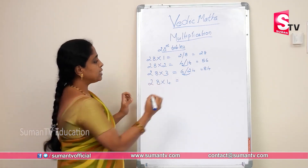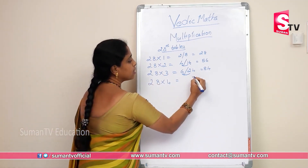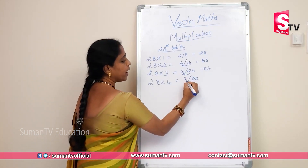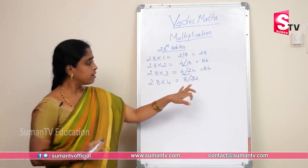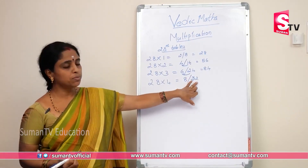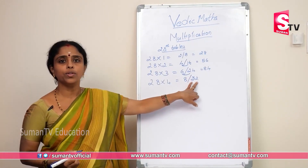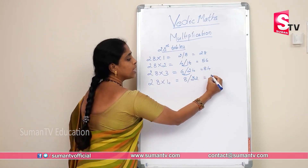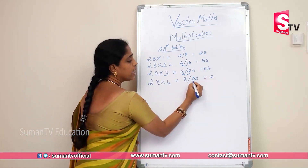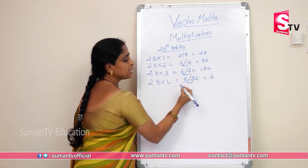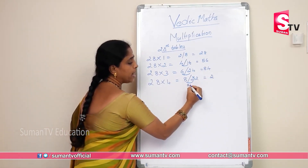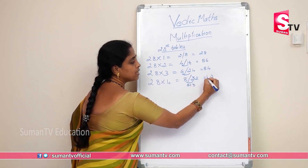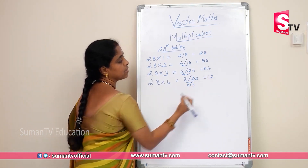Now 28 × 4. 4 eights are 32. 4 twos are 8. Keep 2 in unit place, carry the 3. One carry forward: 8 plus 3 is 11. So 28 × 4 is 112.